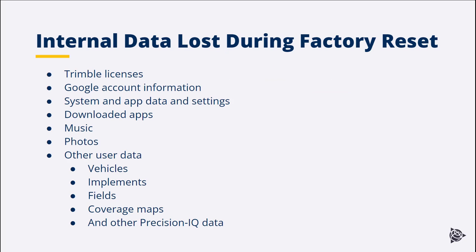During a factory reset, several data files will be deleted or removed. This can include Trimble display licenses, Google account information, system and app data and settings, and downloaded apps.